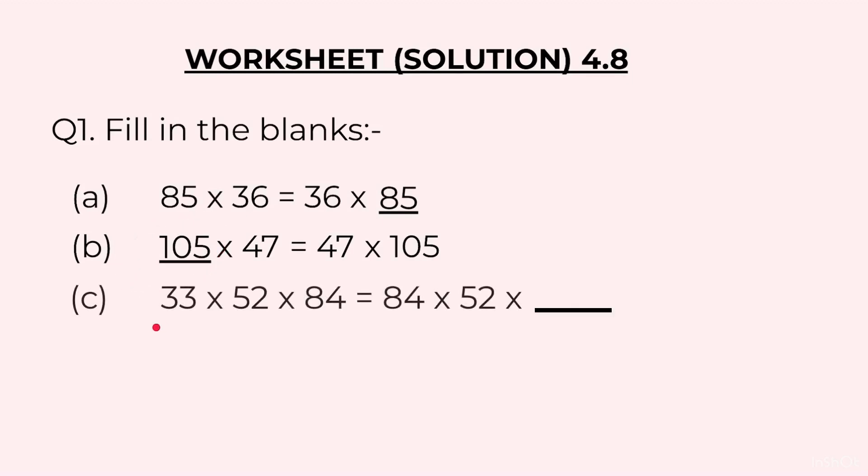C part, 33 into 52 into 84 is equal to 84 into 52 into dash. 33 will come in this blank.